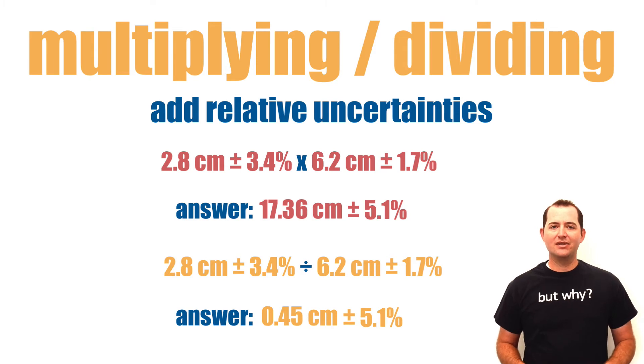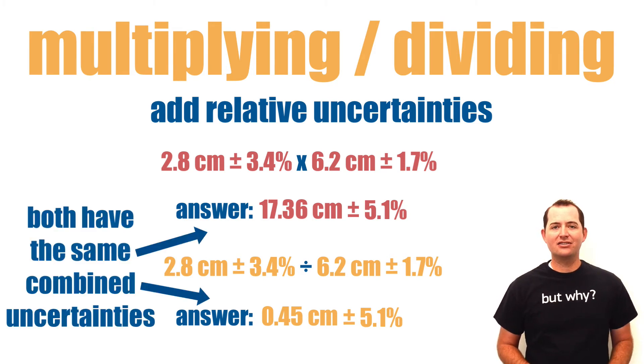You can notice from these two examples that our relative uncertainties in our answer should be the same whether we are multiplying or dividing our values with uncertainties.